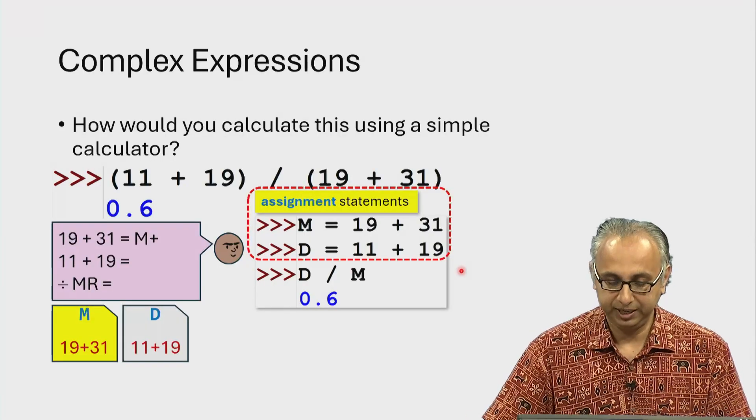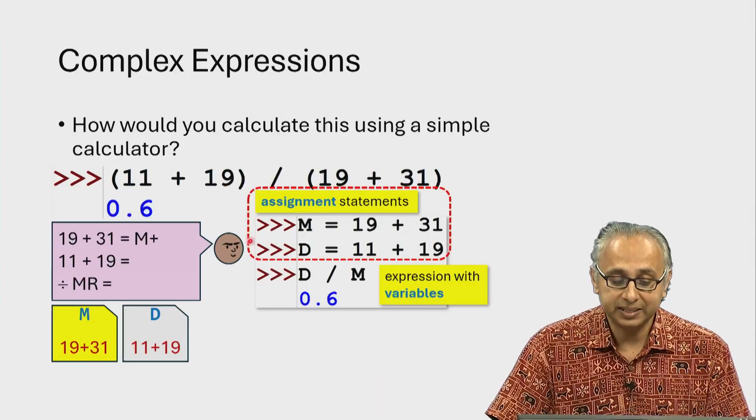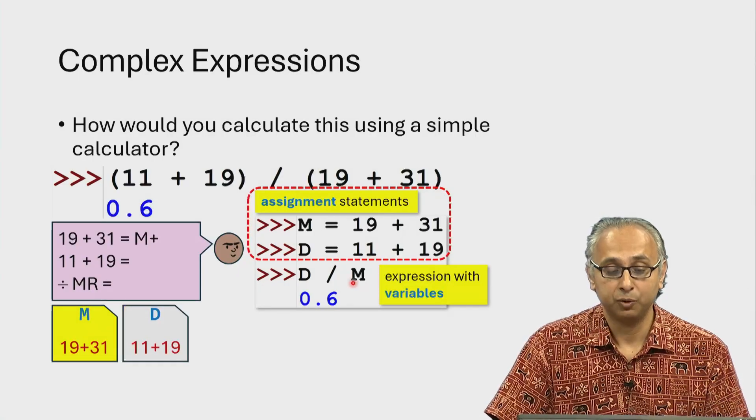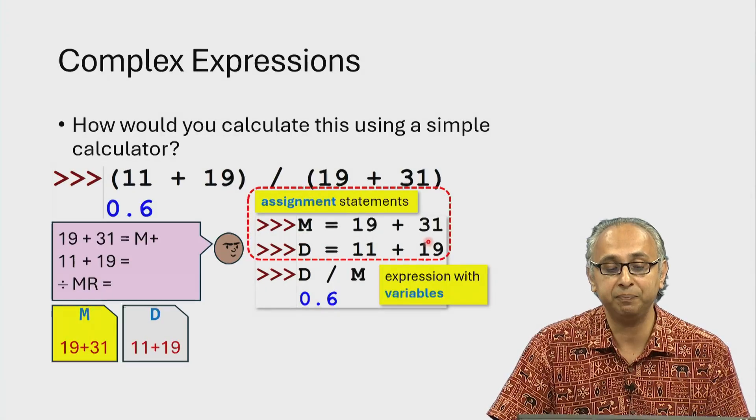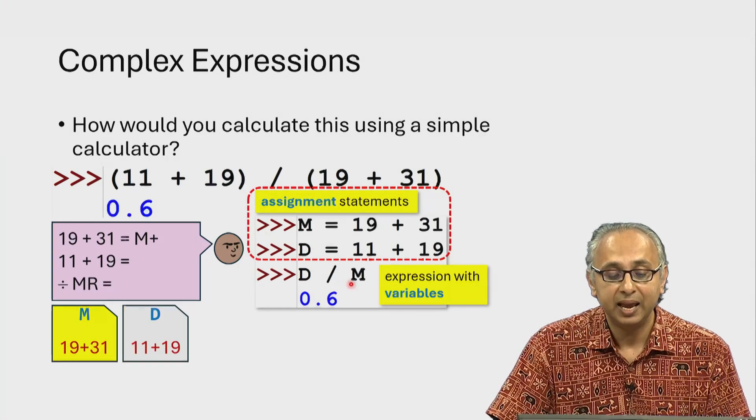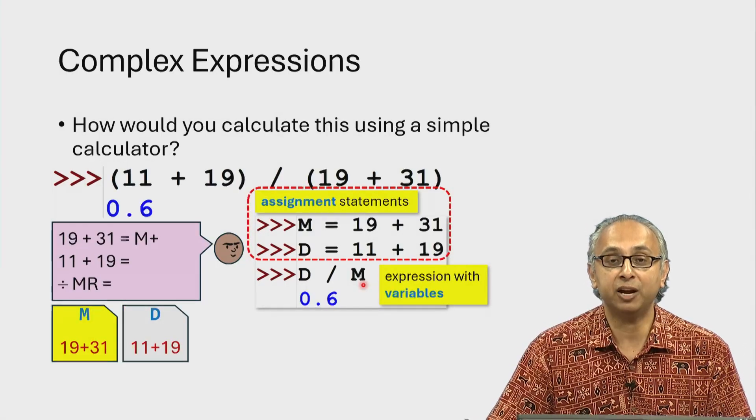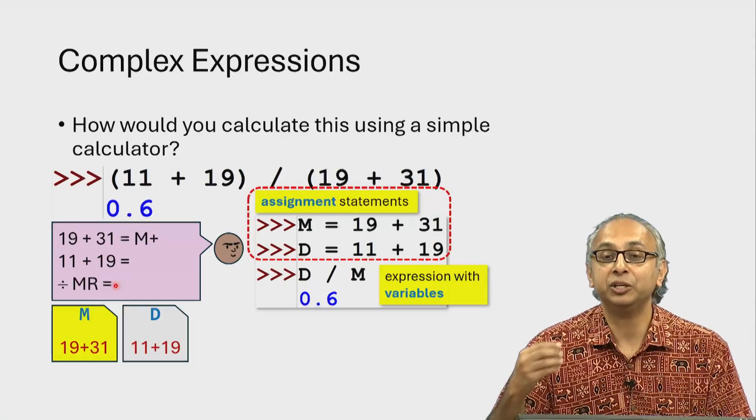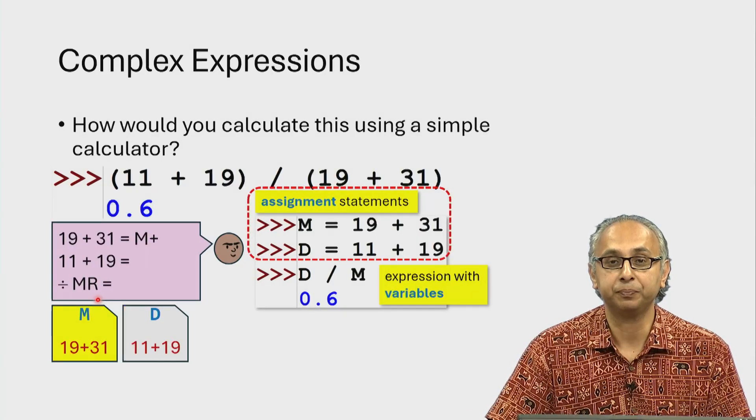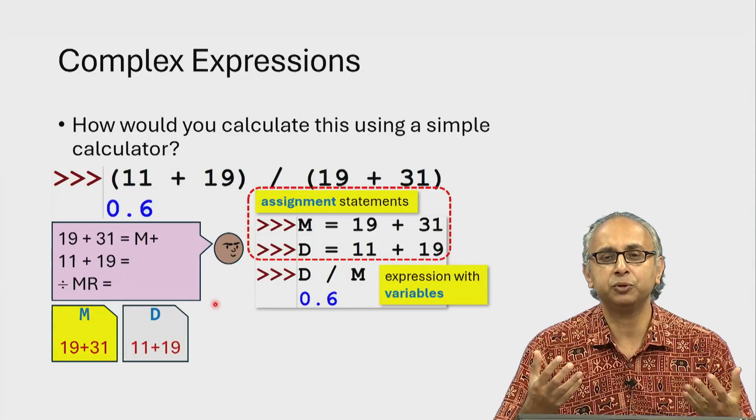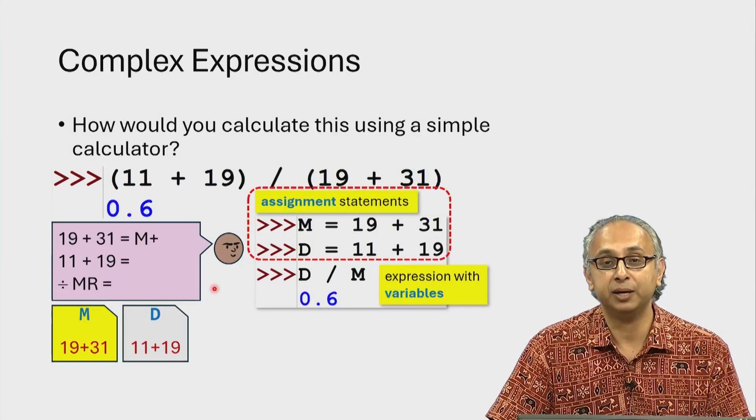This expression down here is an expression that doesn't use raw values as we have seen in this expression. Instead, some of these are variables which we have initialized in these assignment statements. We have given a value to M namely 19 plus 31. We have given a value to D namely 11 plus 19 and here we are calculating an expression that uses the values of those saved variables very similar to the way the calculator used those saved values that were displayed or were recalled from memory. So, I am using this calculator analogy just to help you see some similarities between what we are about to see with assignment statements and what you are already familiar with using a calculator.